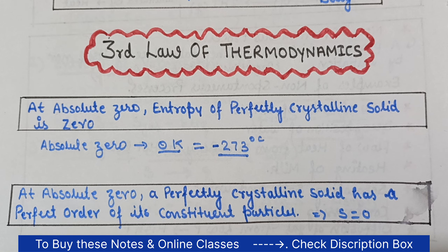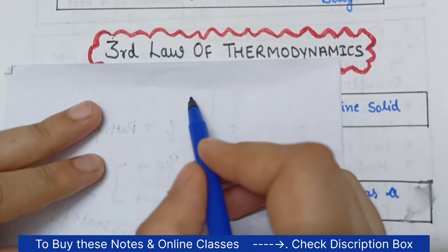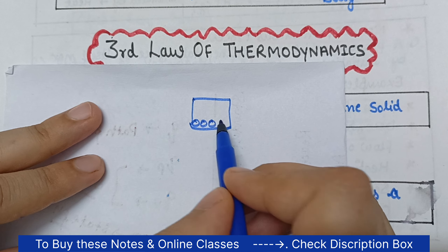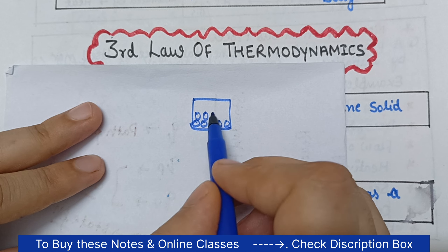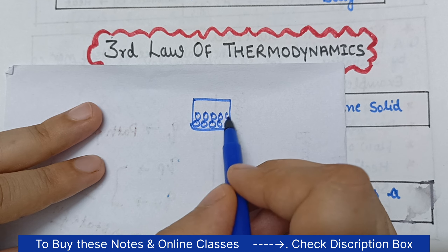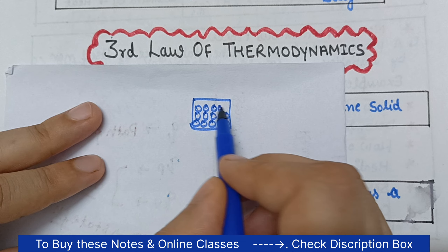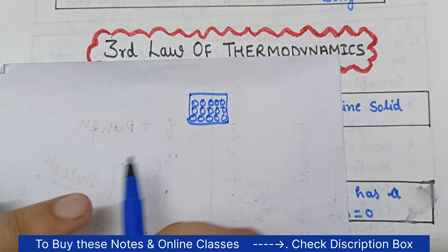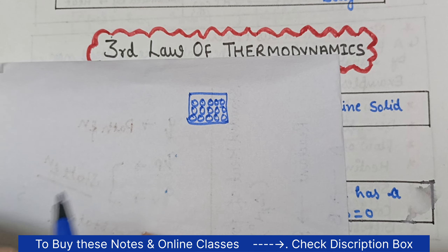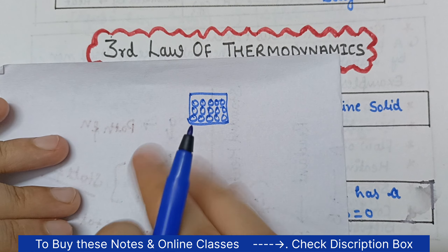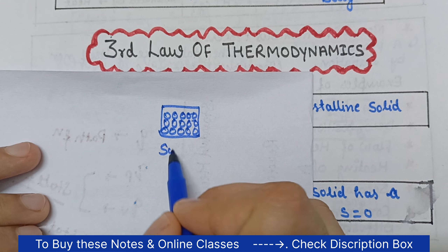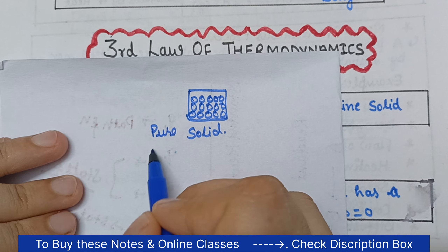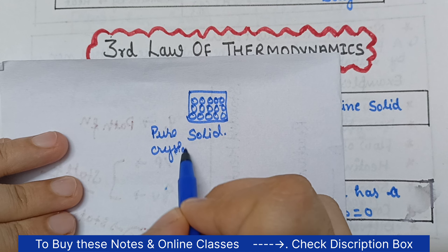Why are we saying this? How can we support this? In a solid, we know that there are particles, and they are in order. But there is still a little motion — it vibrates a little. We can say there is a little randomness, but it is less. If we put this solid in pure crystalline form...